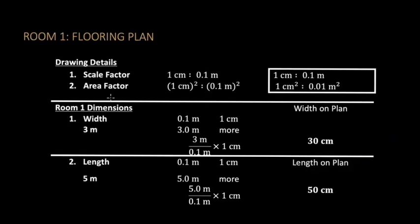In the previous video we mentioned how we calculate the width and the length on the plan. On the module that you'll be doing, we use simple ratios. So the width is 30 centimeters.